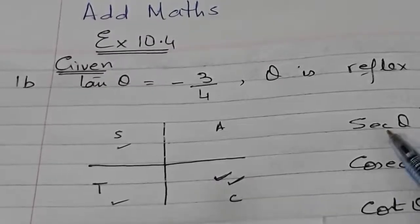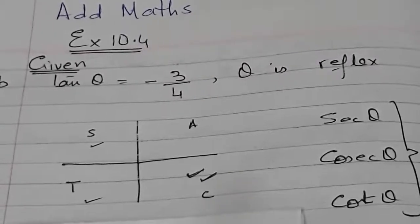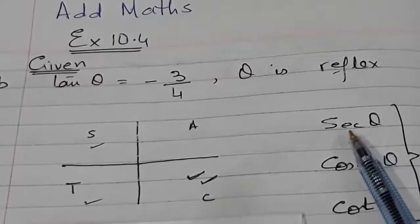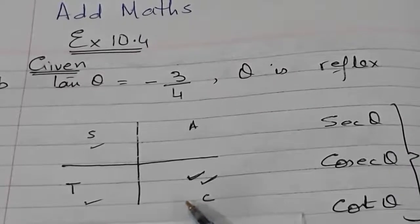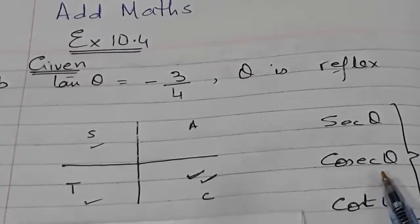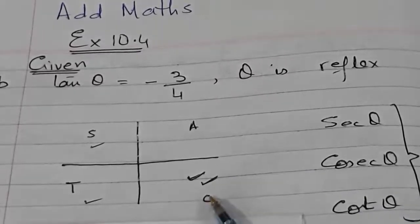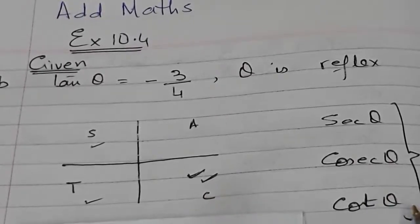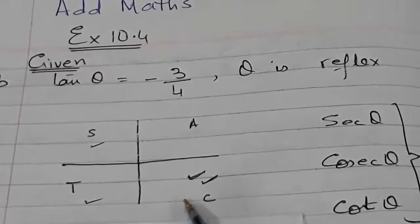Sec θ is the inverse of cos θ, so only sec θ will be positive because sec θ = 1/cos θ and cos is positive. Cosec θ = 1/sin θ, and sin θ in the fourth quadrant is negative. Similarly, cot θ = 1/tan θ and tan θ is negative in the fourth quadrant.